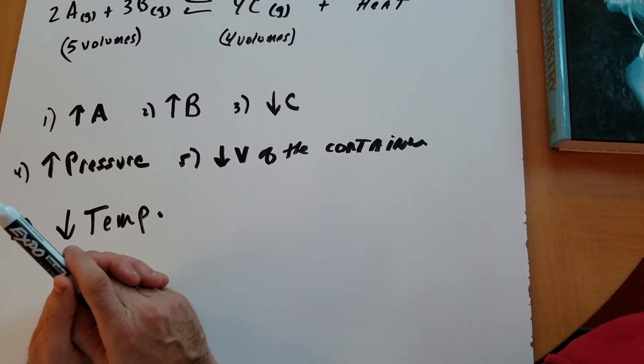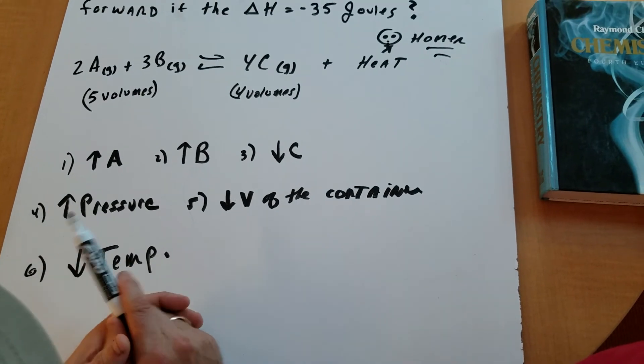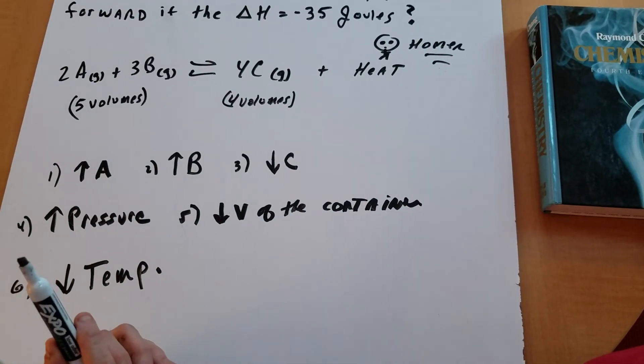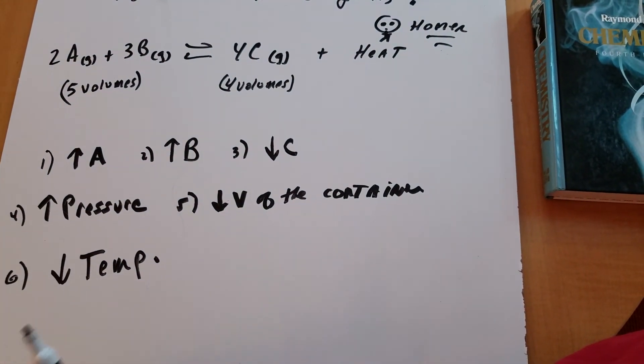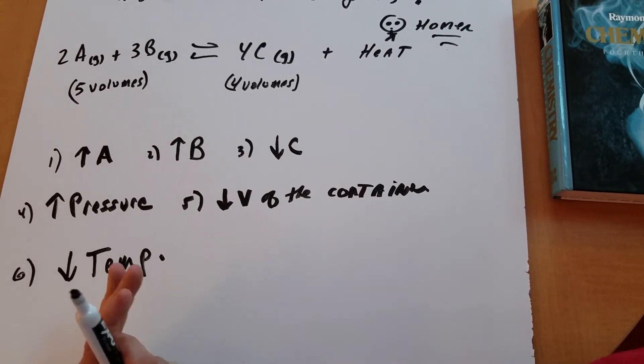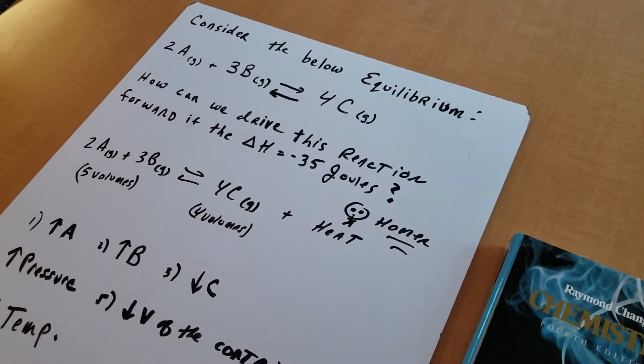So there you have it. We can increase A or B, decrease C. We can increase pressure, decrease the volume of the container or decrease the temperature. These will be six things that I can do to favor product formation.